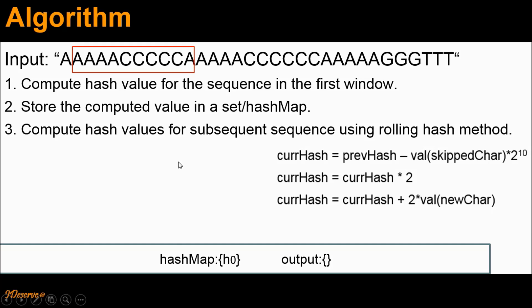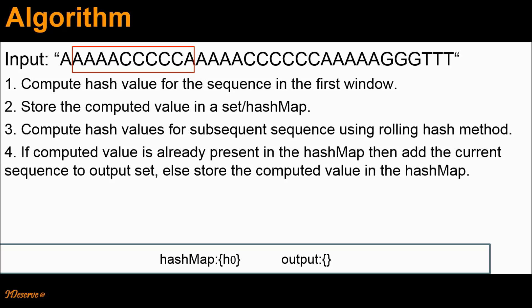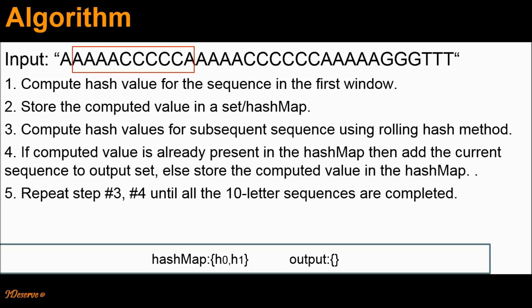The newly added character would be A again. At the end of these 3 steps, the current hash value would be the hash value for this new sequence. Now if the newly computed hash value is already present in the hash map, then we add the current sequence to the output set, because at this point we know that we have already come across this particular sequence and therefore that hash value is already present in the hash map. Otherwise, we store the newly computed hash value in the hash map. We repeat steps 3 and 4 until all the 10-letter sequences are completed.